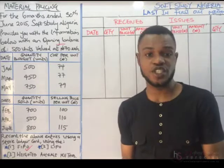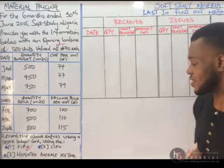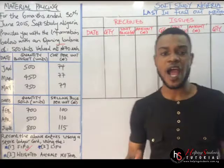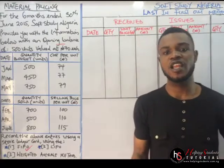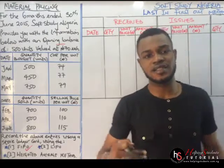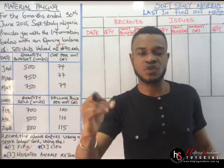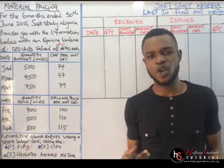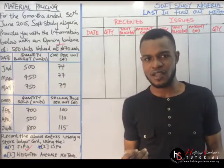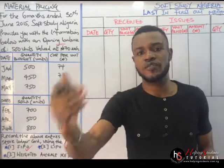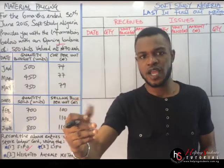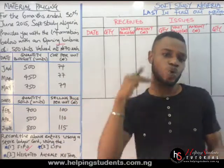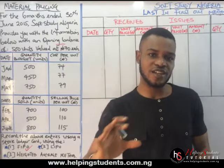Let us solve the second question, which is the LIFO method. LIFO simply states last in, first out. It simply means that the goods that came in last will be sold first. The quantity that came in last will be sold first.